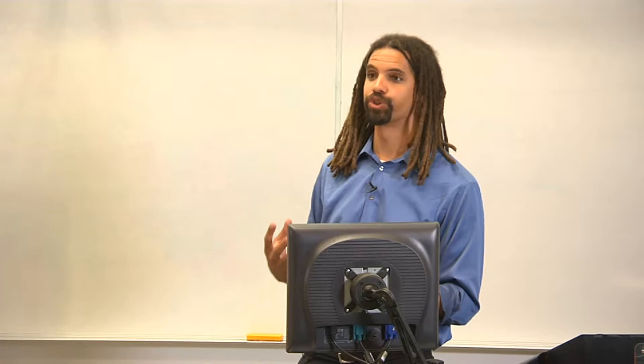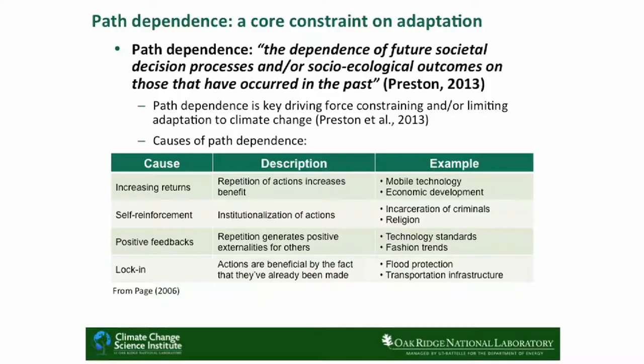In that context, I see path dependence as one of those really fundamental societal institutional processes that's giving rise to a lot of these constraints. Whether you're talking about institutional issues, finance issues, or technology, there's a much broader challenge associated with path dependence that's giving rise to those issues. We presented that definition in a paper in Global Environmental Change last year: the dependence of future societal decision processes and outcomes with respect to adaptation is constrained or influenced by what we've done or what's happened in the past. We argued in a later paper that this is one of these key driving forces. When you get into the path dependence literature — a lot of it comes out of economics — you get more nuanced and sophisticated discussions of what path dependence really is.